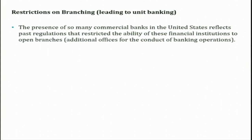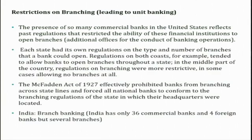In the US there are restrictions on branching — banks are not allowed to open branches across the country. That actually led to the presence of so many commercial banks in the United States. Each state had its own regulations on the type and number of branches that a bank could open within a state. Overall, there were policy interventions to ensure banks were not opening branches across the country, and it forced all national banks to conform to the branching regulations of the state in which their headquarters were located.